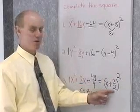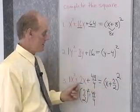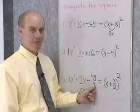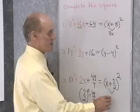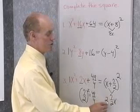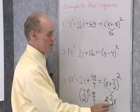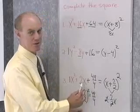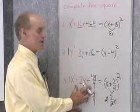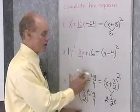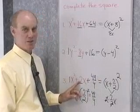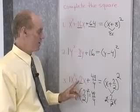Now, let's just check that real quick. The square of x is x squared. The square of 7 halves is 49 fourths. If I multiply these two together, I get 7 halves x. Double that: 2 times 7 halves x, which is 7x. So I get the correct middle term. So if I square this binomial, I do, in fact, get this trinomial. These are the hardest ones to work with when the coefficient of x is not an even number — not divisible evenly by 2.